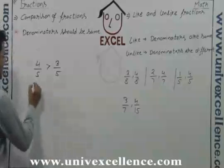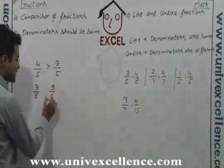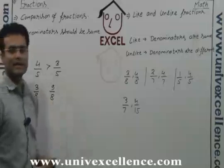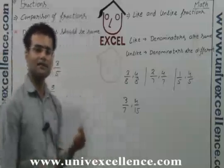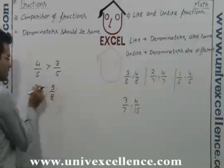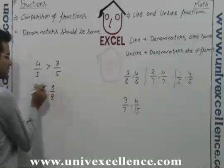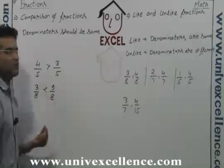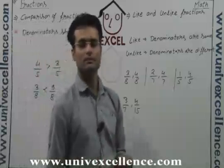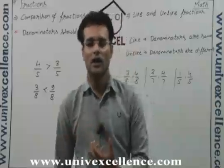If you have 3 by 8 and 9 by 8, just check the denominators. The denominators are same. So just check these numerators, which is the larger one? 9. So this will be the larger one. So this is how you can compare.